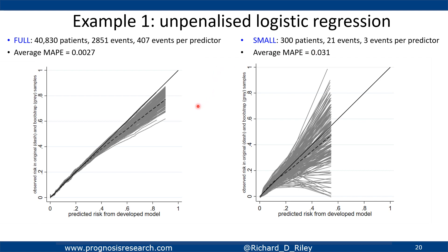Looking at the instability in the calibration curves — plotting the original predictions' calibration in each of the bootstrap samples — for the full big data, the variability in calibration curves is quite narrow. But in the small dataset, the calibration curves are very variable; some are down here, some are up here. This suggests that without further validation data, in the small dataset it's highly unlikely the model will be well calibrated in new data because the scatter is so broad, whereas the big-data model would be expected to be reasonably well calibrated.